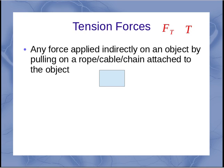So what does that mean? I've got an object and I want to pull on it, but I'm not pulling directly on the box. Instead, I'm pulling on some sort of rope that's attached to that box. And it could be a rope, a cable, a chain, any of those things.